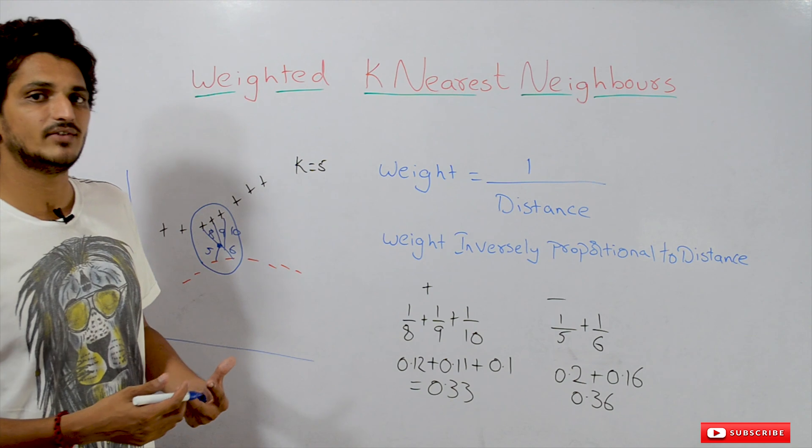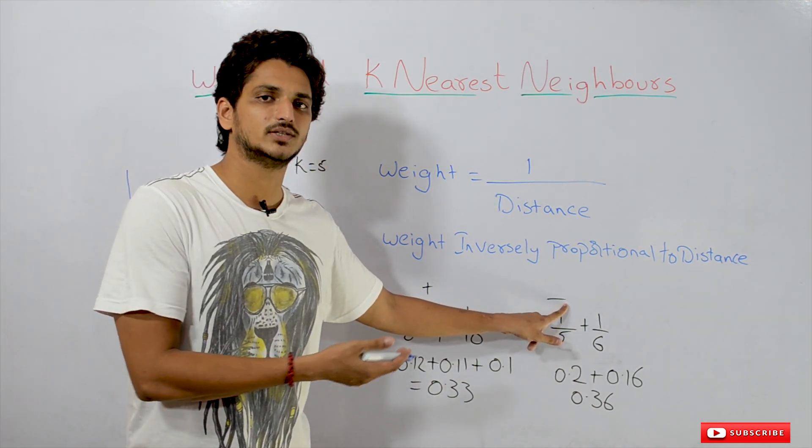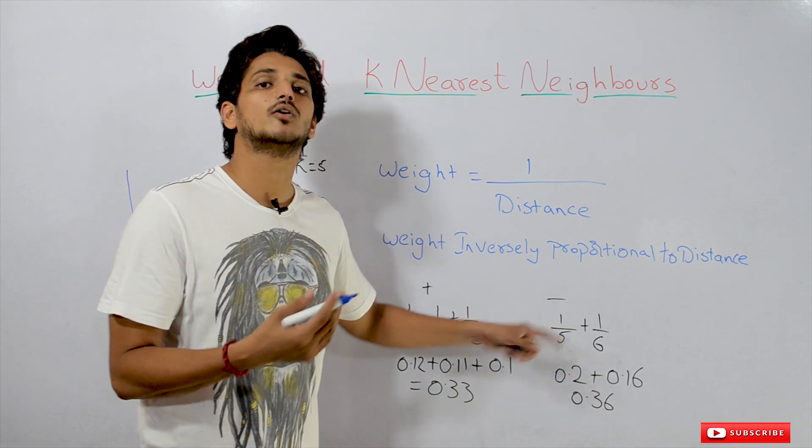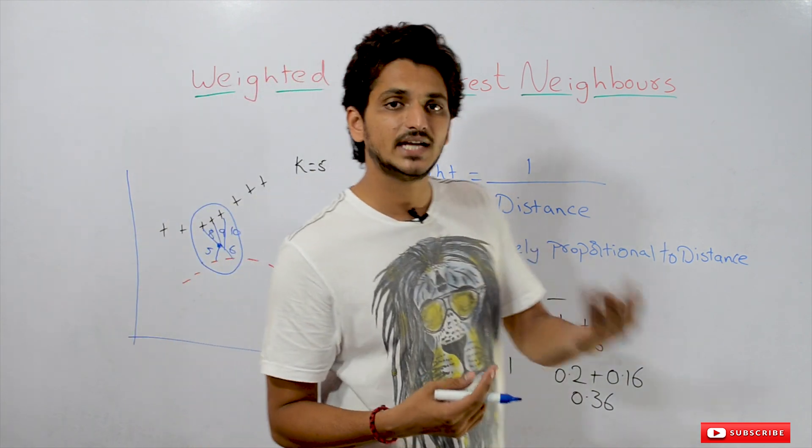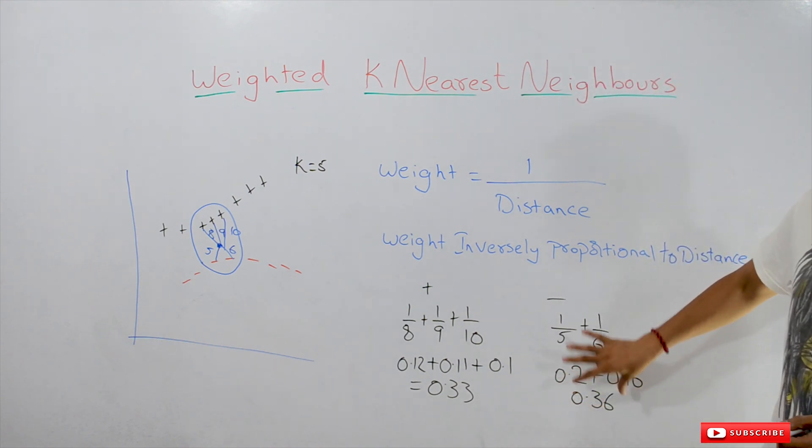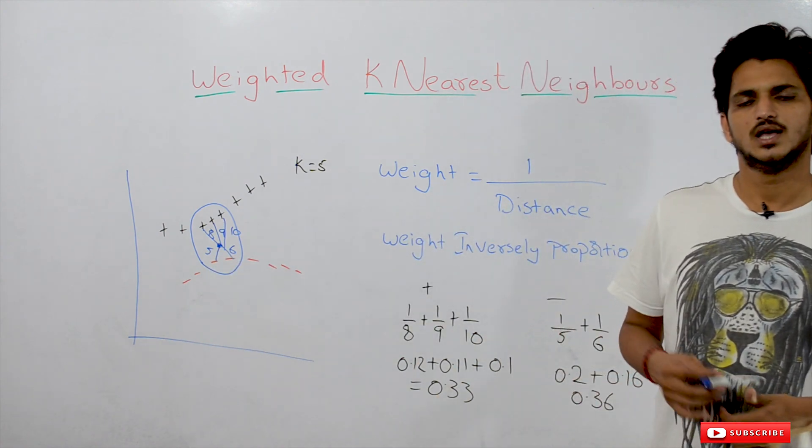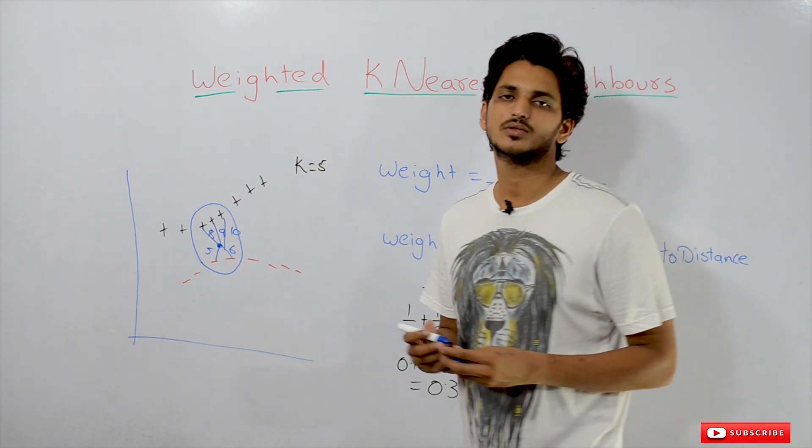So which one is having the highest weight? Negative data set is having the highest weights. So our weighted k-nearest neighbor will identify based on this weight value. It will identify negative point as our predicted output for this testing data point. This is how weighted k-nearest neighbor works.